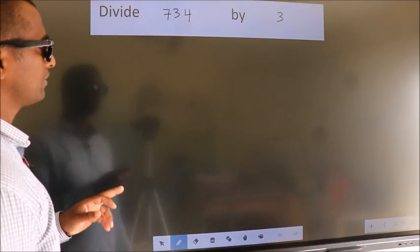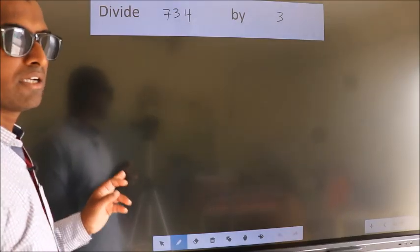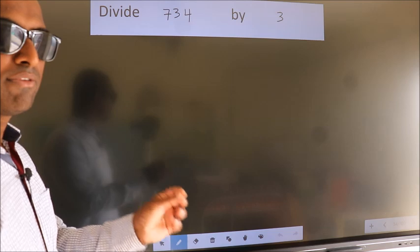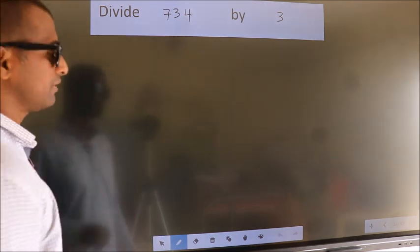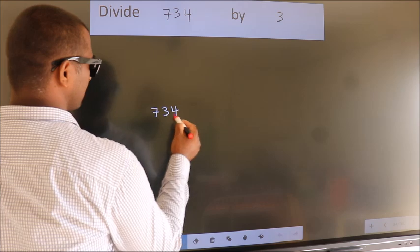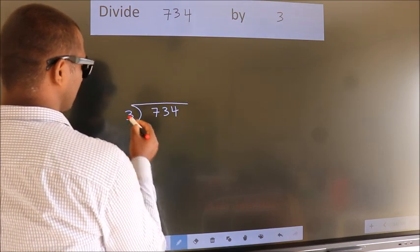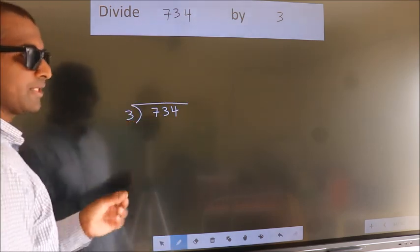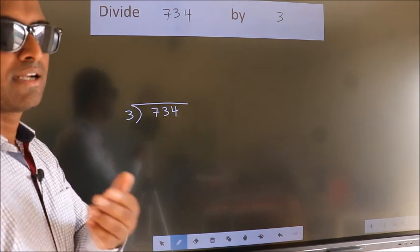Divide 734 by 3. To do this division, we should frame it in this way: 734 here, 3 here. This is your step 1.